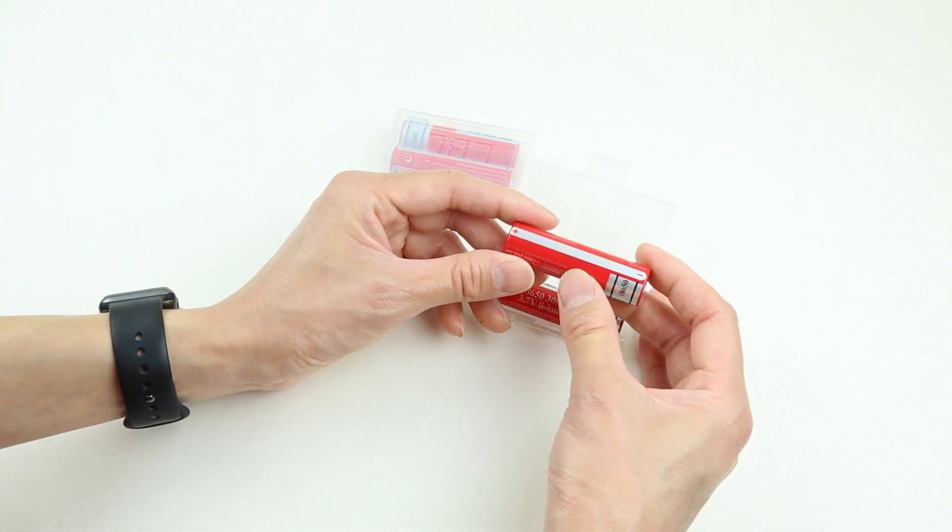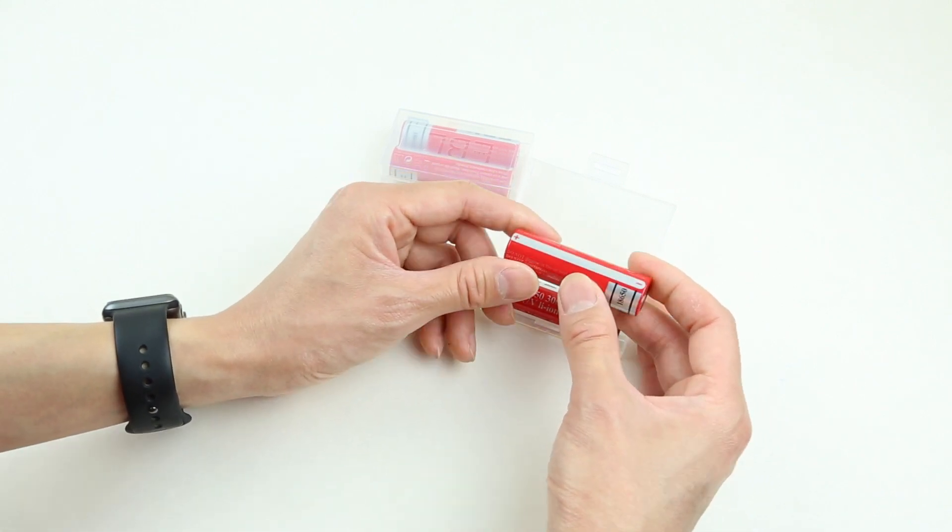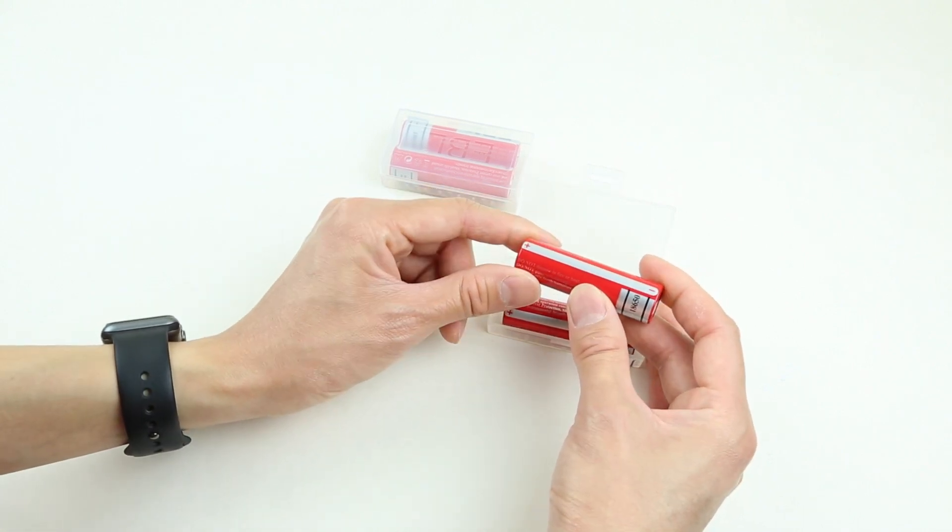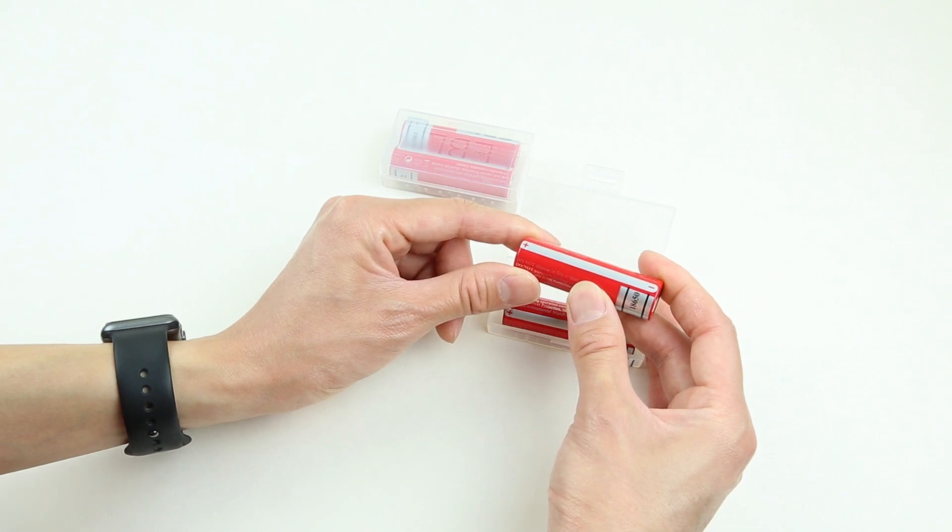And if we turn the battery around a little bit, we can actually even see a manufactured date stamped on the battery. This one says 2021-0103, which I'm assuming is manufactured on 2021, January 3rd.